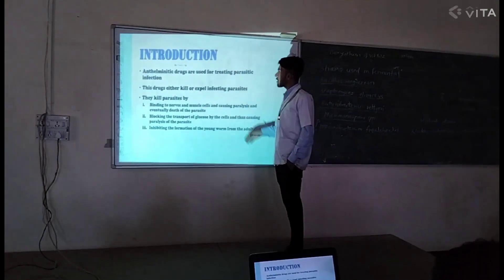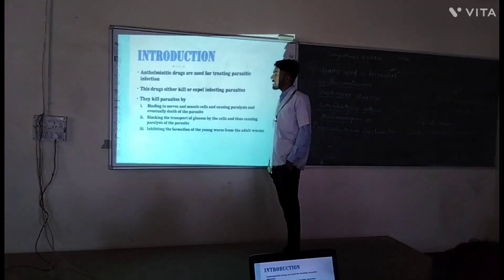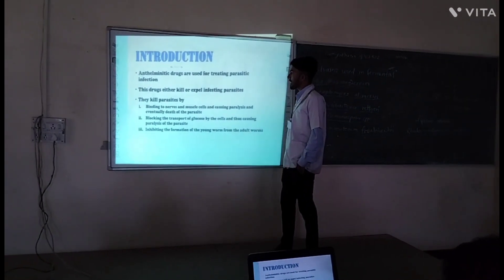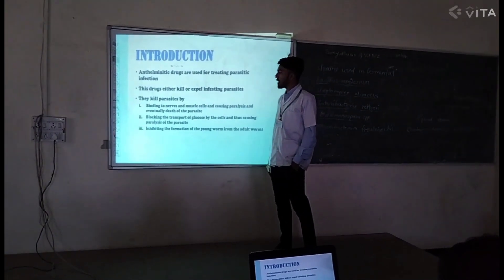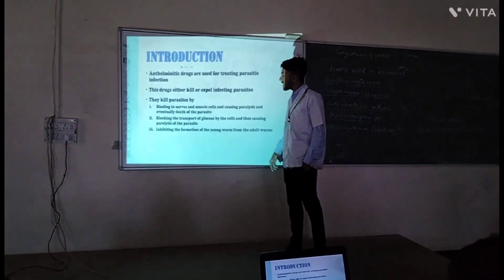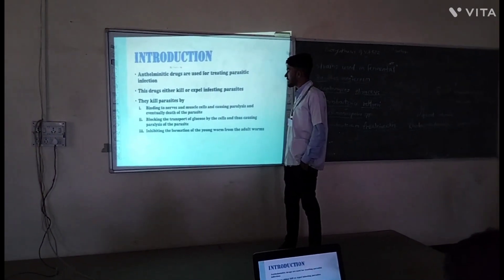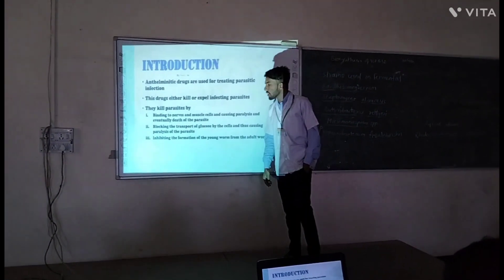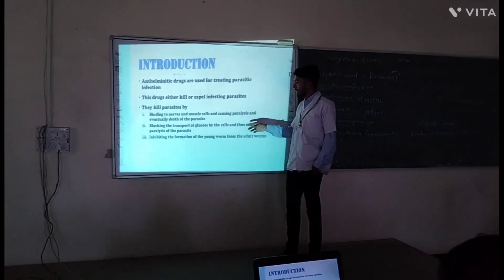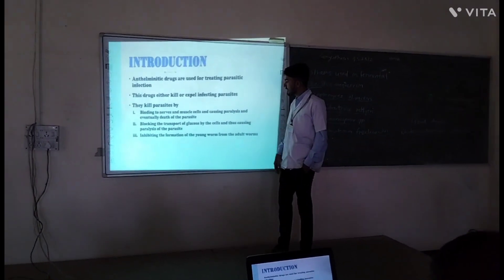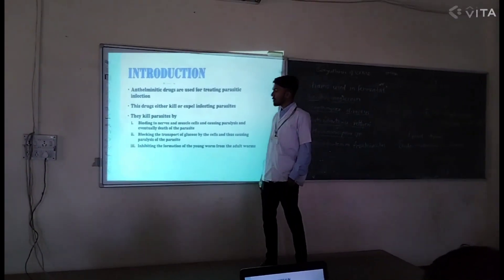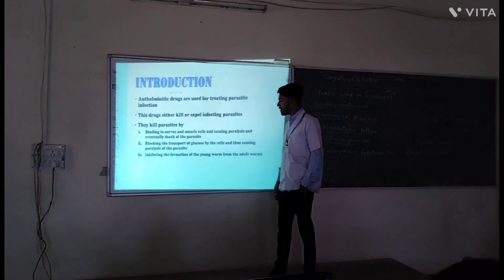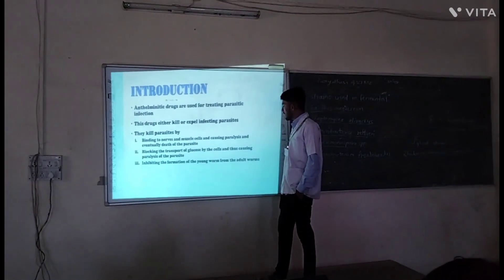The anthelmintic drugs are used for treating the parasitic infection. These drugs either kill or expel the infesting parasites. They treat parasites by binding to nerves and muscle cells, causing paralysis and death of the parasite, blocking the transport of glucose, causing paralysis of the parasite, and third, inhibiting the formation of the young worm from the adult.